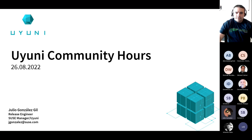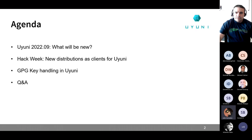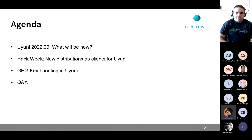Welcome everyone to this August session of the Uyuni community hours. I hope you are all having a lovely summer. This is the agenda for today: first I'm going to present what's new for Uyuni 2022-09, then Raul and myself will present the outcome of the past hack week where we were working on adding new distributions as clients for Uyuni. After that, Michael will talk about GPG key handling in Uyuni, and as always we will have a few minutes for questions and answers.